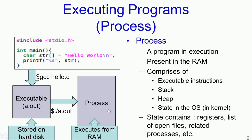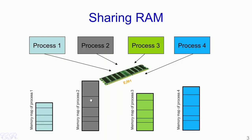As we have seen, this particular process which is present in memory comprises of several segments such as the text segment, which contains the executable instructions, the stack, heap, and also some hidden metadata in the operating system such as registers, list of open files and related processes. All these actually constitute the process. What is important for us is this process and its presence in the RAM. The RAM or random access memory, also called the main memory, is a limited resource in the system — each system would have something like 4, 8, 16 or 32 GB of RAM.